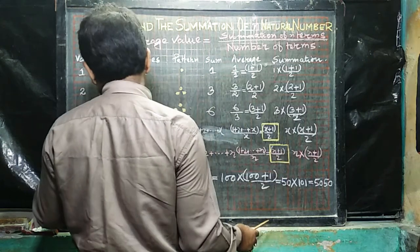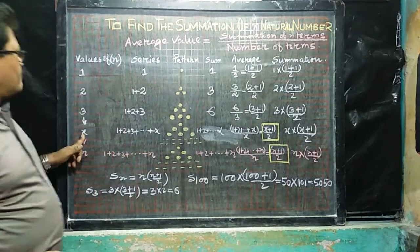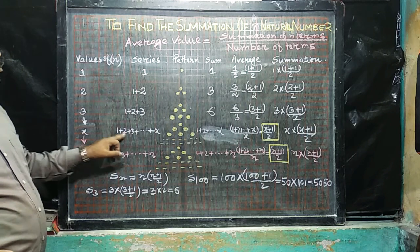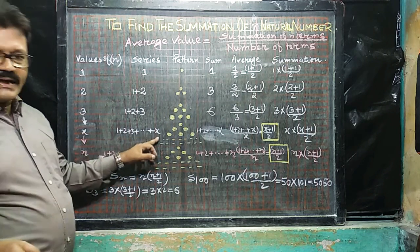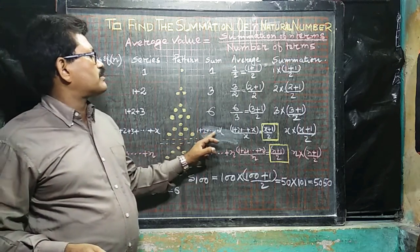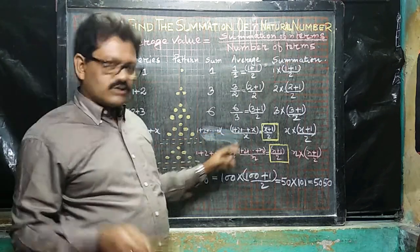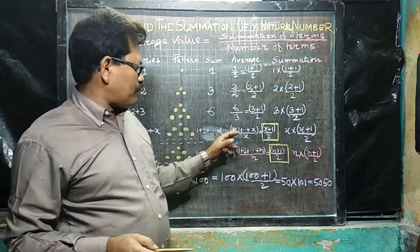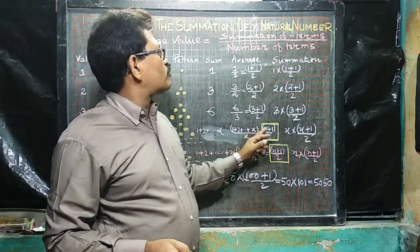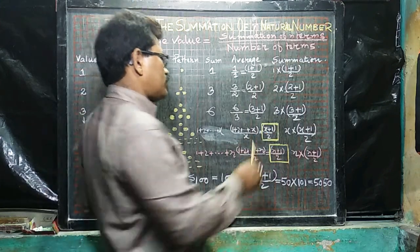Values of first x natural numbers, x, 1, 2, 3, 4, dot dot dot x. The pattern is like this, dotted here, 1 plus 2, plus dot dot dot x. So the average will be 1 plus 2, dot dot dot x, divided by x. So, x plus 1, divided by 2. This is the crucial point here.